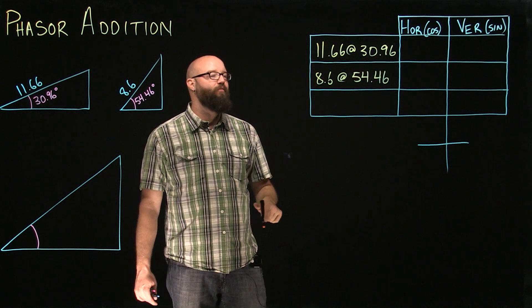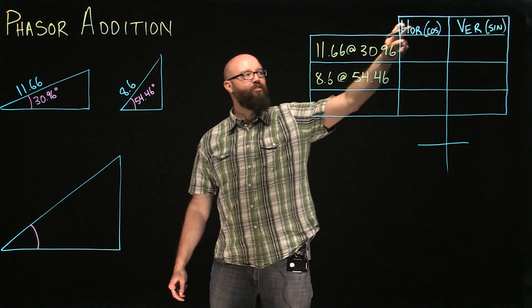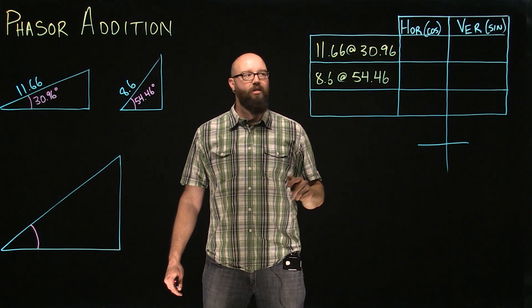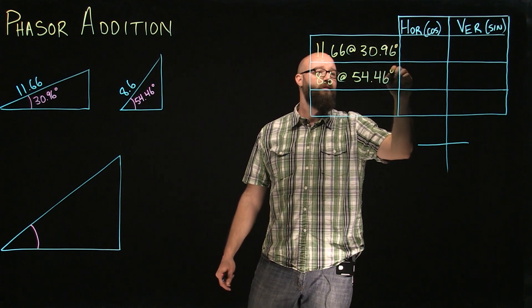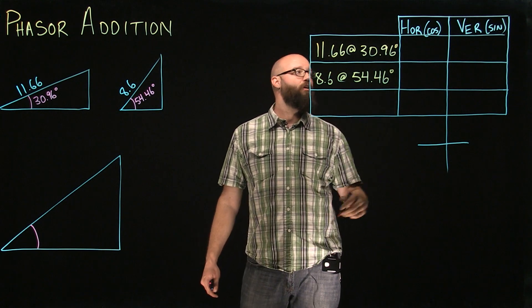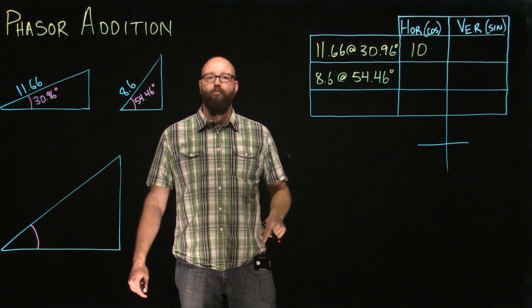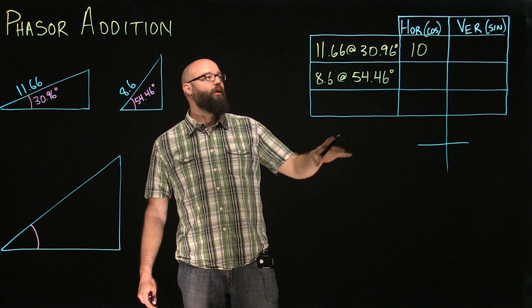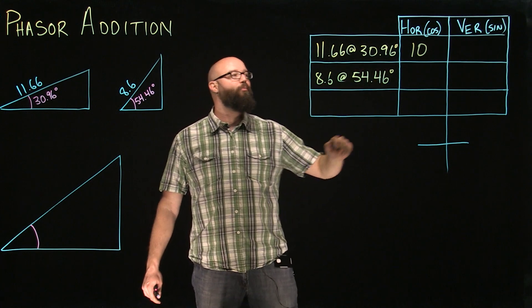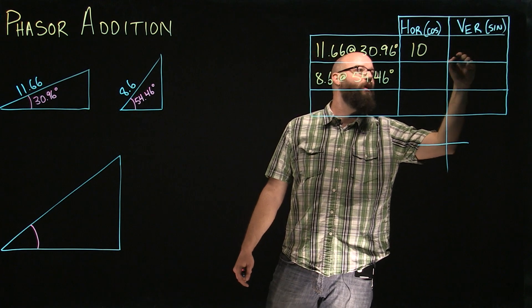Taking our hypotenuse of 11.66 multiplied by the cos of 30.96 degrees, we end up with a horizontal of 10. Taking that 11.66 hypotenuse and multiplying it by the sine of 30.96, we should end up with a vertical of 6.